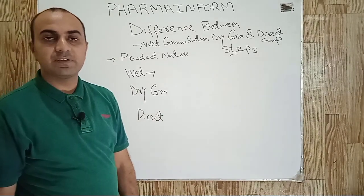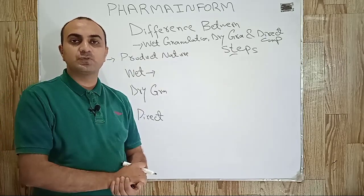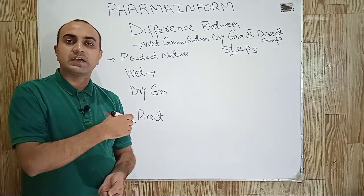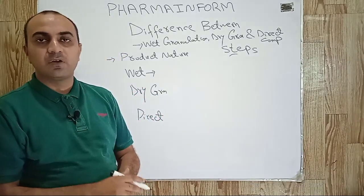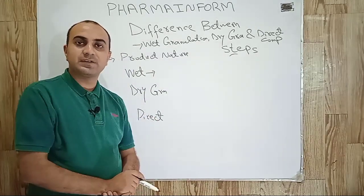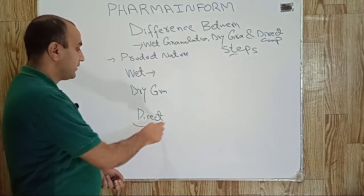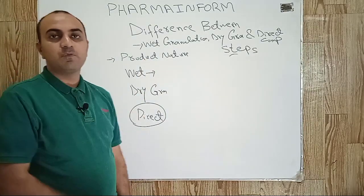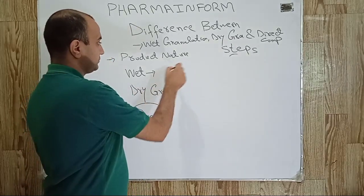The last method is direct compression, which is a very simple method using only sieving and mixing. This method is used for those products which have good compaction properties. We can use granular-form excipients or specialized excipients like spray-dried lactose or Avicel grade 102, which are in granular form and also improve compaction. By using these specialized excipients, we can compress products using the direct compression method.